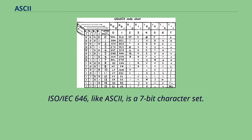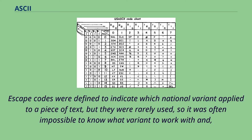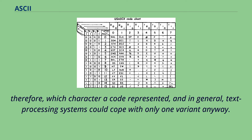ISO/IEC 646, like ASCII, is a 7-bit character set. It does not make any additional codes available, so the same code points encoded different characters in different countries. Escape codes were defined to indicate which national variant applied to a piece of text, but they were rarely used, so it was often impossible to know what variant to work with and therefore which character a code represented. In general, text processing systems could cope with only one variant anyway.